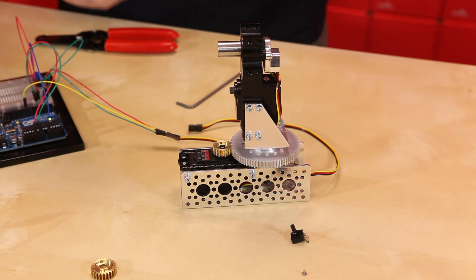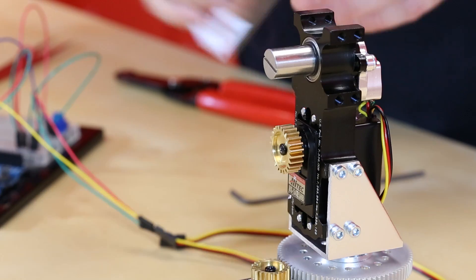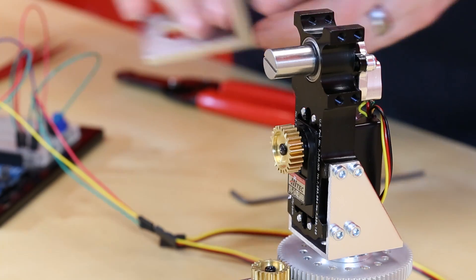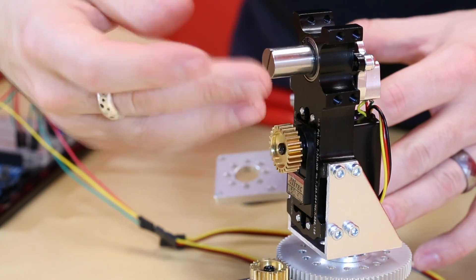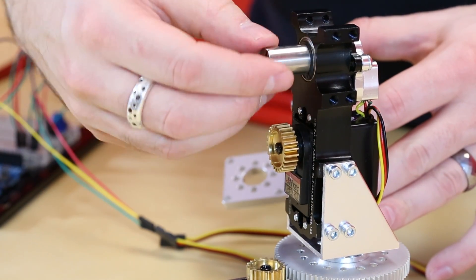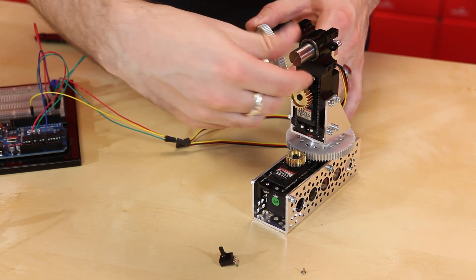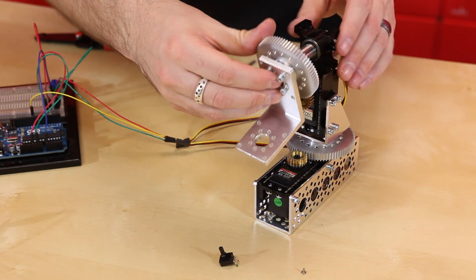Before we attach the main drive gear, I'm going to adjust this upper pot or the upper shaft into the rough center position just so there's a little bit less adjustment later. So I'll turn it all the way over to one side and then find the rough center before I attach this gear.